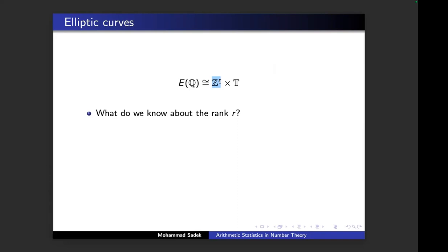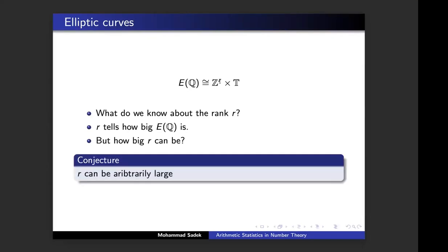What do we know about the rank? R tells us how big E(ℚ) is, but the real question is how big R can be. Can R be one million? Can it be one billion? The folklore conjecture says that R can be arbitrarily large: given any integer, even one million, I can find you an elliptic curve whose rank is that large.